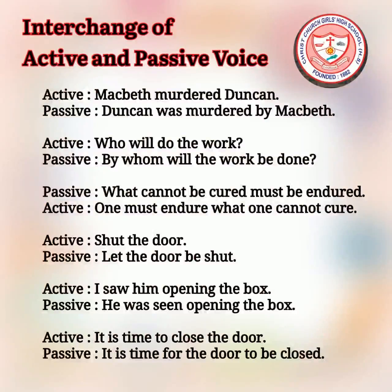Our first example is 'Macbeth murdered Duncan.' Here Duncan is the object of the active voice sentence, and this object will become the subject in passive voice. The transformed sentence would be 'Duncan was murdered by Macbeth.' The next example: 'Who will do the work?' will be transformed to 'By whom will the work be done?' — since the wh-word 'who' in active voice becomes 'by whom' in passive voice.